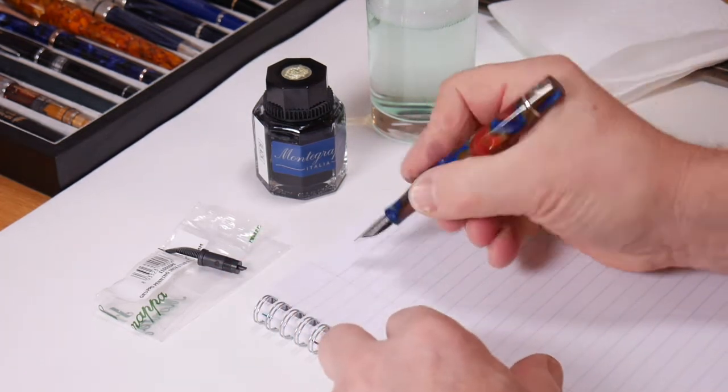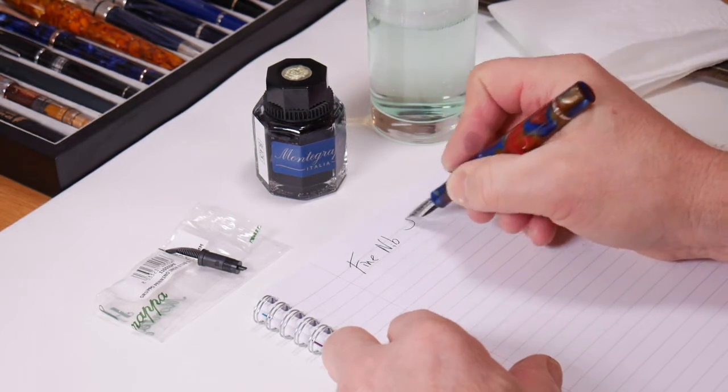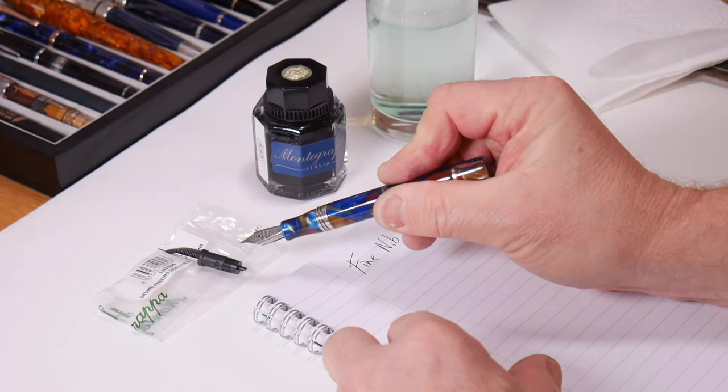So let's remove the fine nib that we've got in here and we're going to swap it for this 1.1 stub.